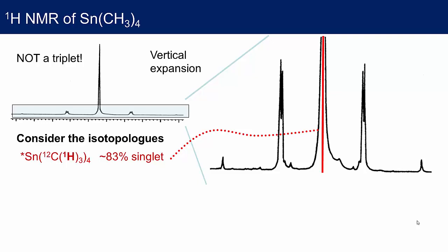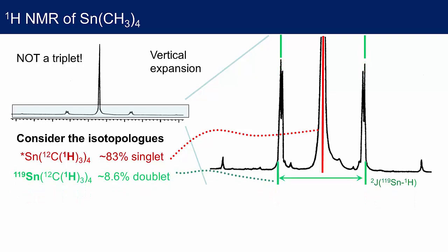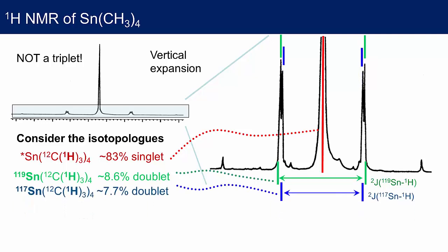The next most significant isotopologue has tin-119 at its centre. This spin-one-half isotope will couple to the protons and split the signal into a doublet, the centre of which will be in the same place as the singlet. We see a doublet marked in green, and the separation of these two lines gives the two-bond tin-119 to proton coupling constant. The next most abundant isotopologue has tin-117 at its centre. Tin-117 is only slightly less abundant than tin-119 and also has a spin-one-half nucleus, splitting the proton NMR signal into a doublet marked in blue. The separation of these lines gives the two-bond tin-117 to proton coupling constant.